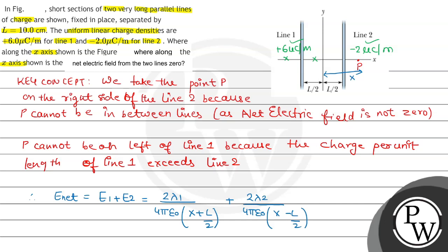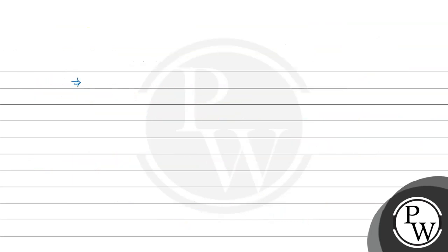Now if we solve this, we will solve for x and its value is zero, because at point P our electric field is zero.